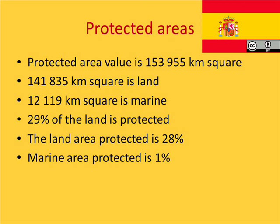Spain's protected area has a total of 153,955 square kilometers, of which 141,835 square kilometers is land and 12,119 kilometers is marine. Twenty-nine percent of the land of Spain is protected, with 28% being protected land area and the remaining 1% being marine protected area.